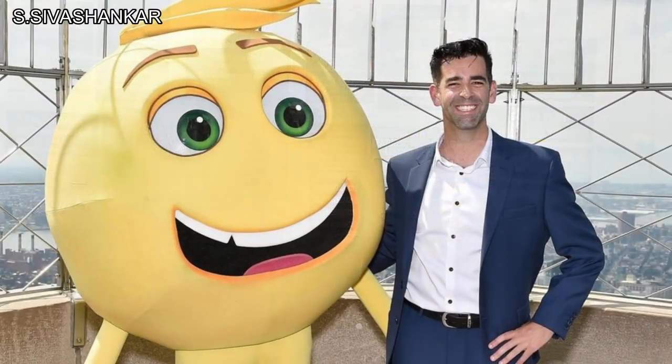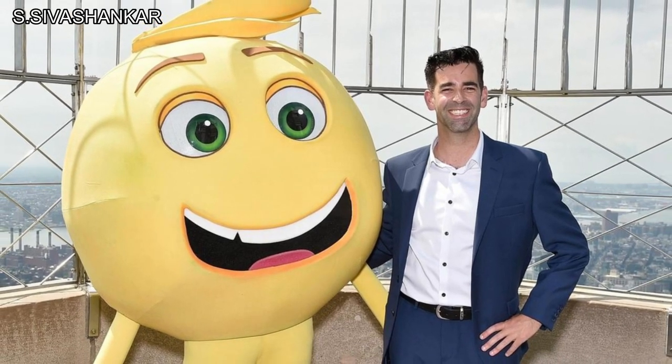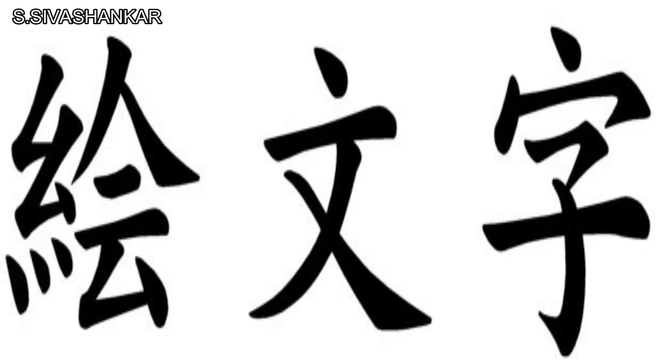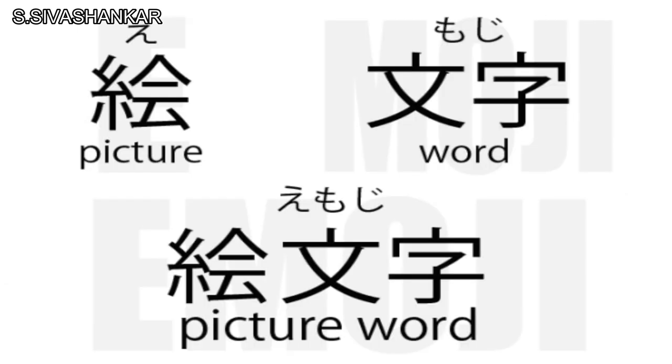An emoji is a symbolic representation of our emotions, an idea, or a concept. Emojis are independent — they are not based on any language or culture. As for the word 'emoji' itself, it comes from the Japanese language and is divided into two parts: 'e,' which means picture, and 'moji,' which means character. So one picture characterizes one character — that is an emoji.